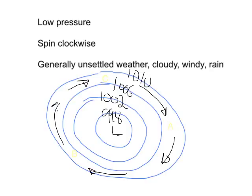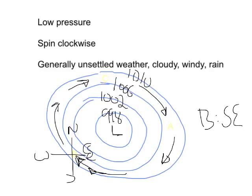Generally with low pressure systems we get unsettled, cloudy, windy conditions — potentially rain and storms. The thing you really need to work out is wind direction. If we go to point B and put our little compass there — in a low, the pressure system is spinning clockwise, so the wind is coming up here, and at point B it would be a southeasterly breeze. I'll pause it — try and work out the wind at C and the wind at A.